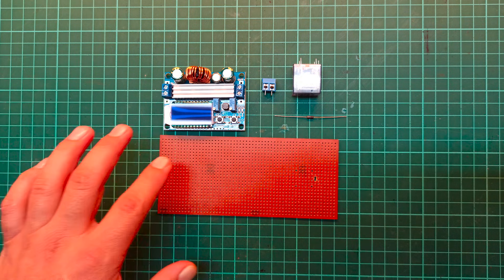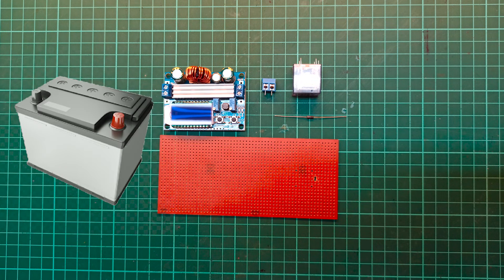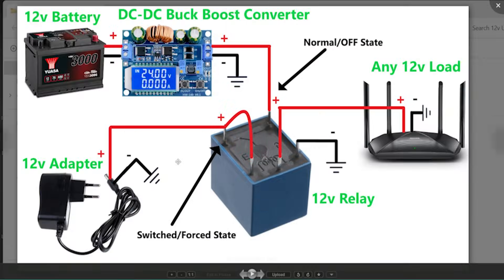The circuit that we are going to design here will be able to automatically switch between the primary and the secondary power supply so that our load may receive continuous power supply. This is the circuit diagram that we are going to follow to design the circuit. Here you can see that we have two power sources: the primary power source is this 12 volt adapter, while the secondary power source or the backup will be this 12 volt battery.